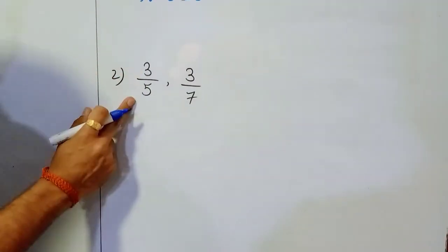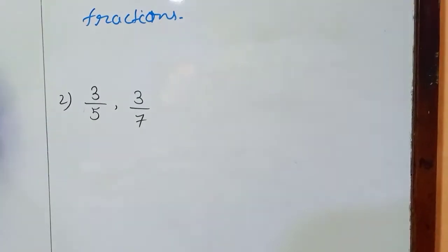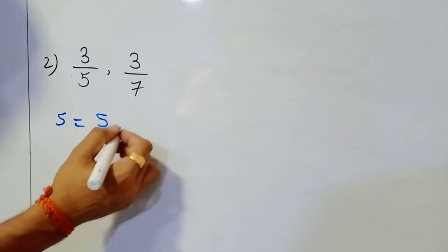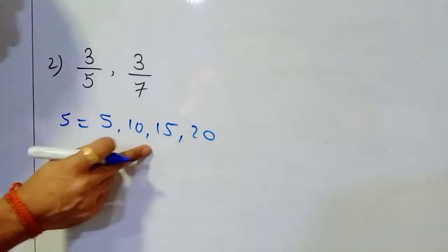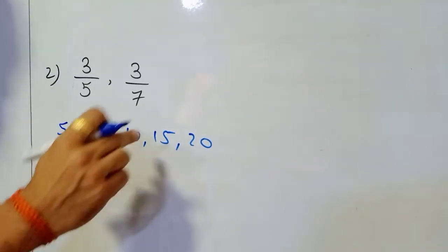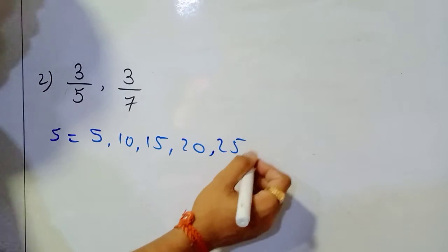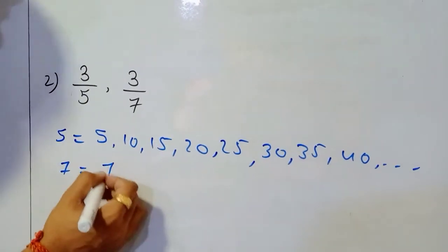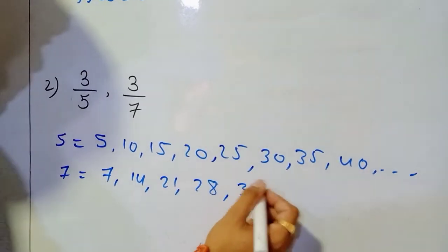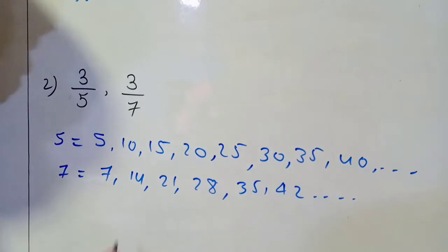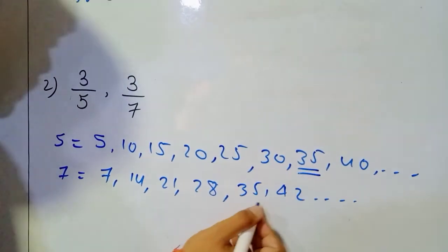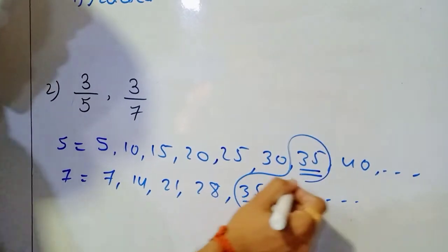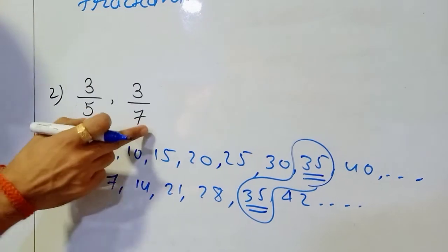The next one is 3 upon 5 and 3 upon 7 — again different denominators. We find the multiples of 5: 5, 10, 15, 20, 25, 30, 35, 40 and so on. Multiples of 7: 7, 14, 21, 28, 35, 42 and so on. The common multiple is 35, and before 35 there is no earlier common multiple, so the least common multiple is 35. We must convert both denominators into 35.